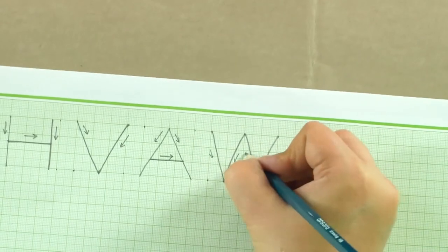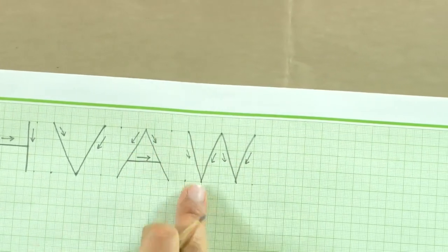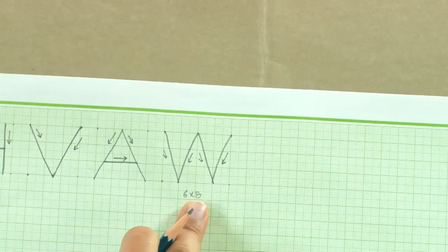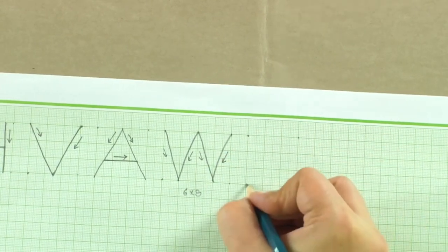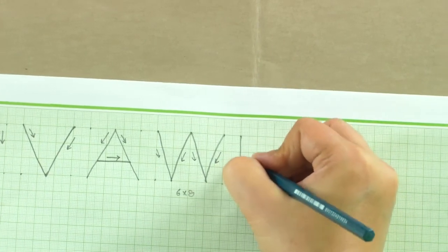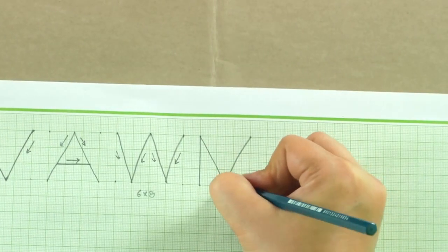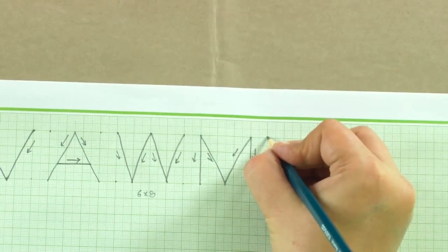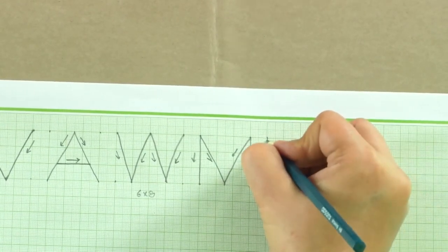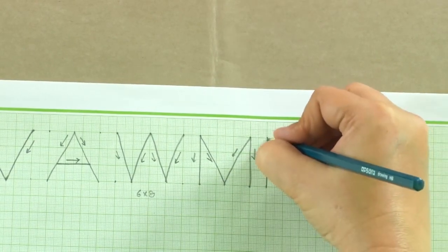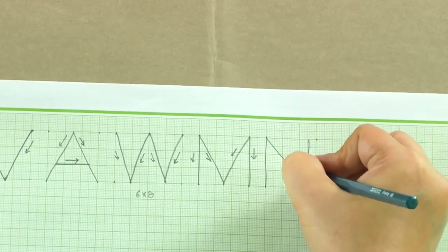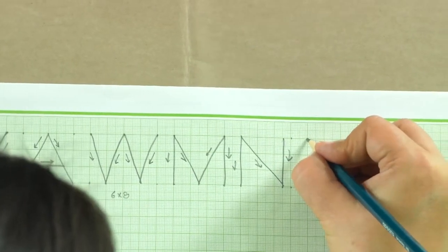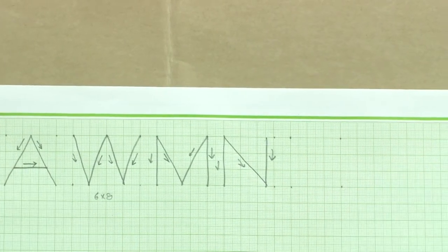W is the only letter wider than 6 units — it is 8 units wide. So W is drawn in 4 strokes: two Vs but thinner, making it 6 by 8 overall. M is again a 6-by-6 alphabet — unlike W, M has the edges straight and the internal ones inclined. N is again 5 by 6. K is also a 5-by-6 alphabet.